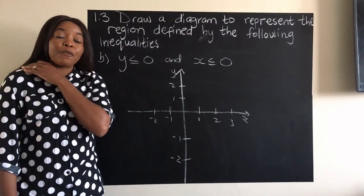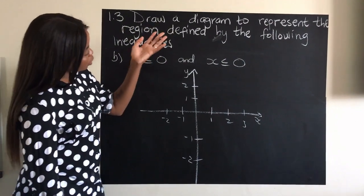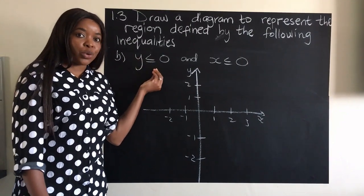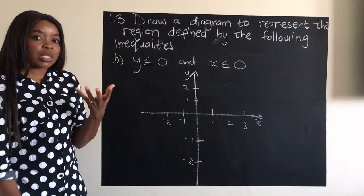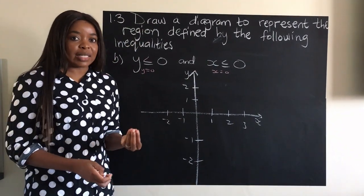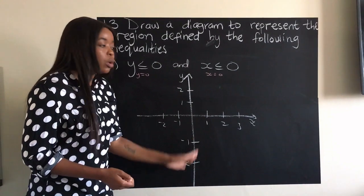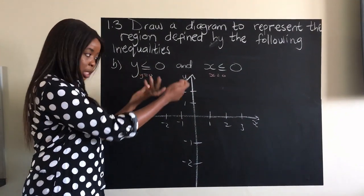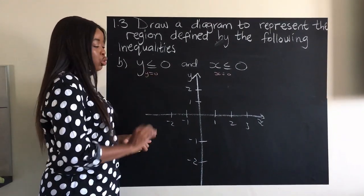The last example with one variable involved: draw a diagram to represent the region defined by y is less than or equal to zero and x is less than or equal to zero. The two equations are y equals zero and x equals zero. Draw your axes, label them — you just need to accommodate zero on both axes.